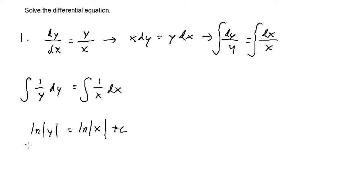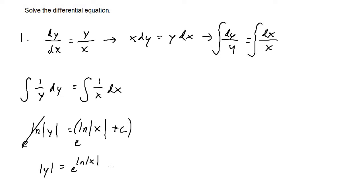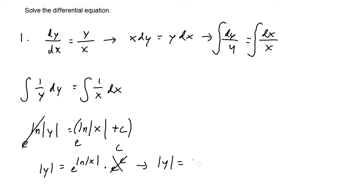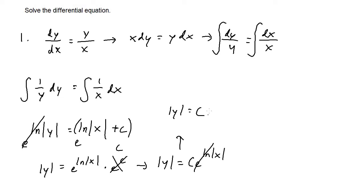In order to isolate y, I'm going to exponentiate both sides. So we have e to the ln|y| equals e to the ln|x| plus c. The e and ln cancel, so we get |y| equals e to the ln|x| times e to the c. Because e raised to the power of a constant is just another constant, we can replace e to the c with just c. So |y| equals c times e to the ln|x|.